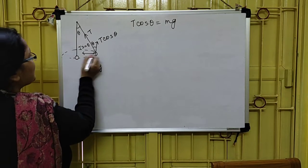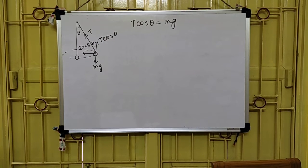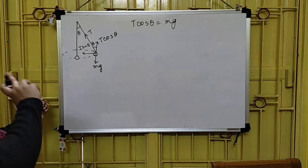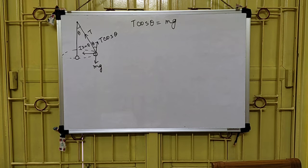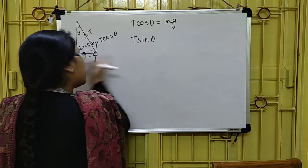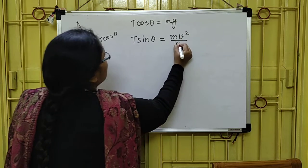Since the object is moving in horizontal circular motion, the centripetal force acts towards the centre of the circle. Therefore T sin theta provides the required centripetal force. So T sin theta equals the centripetal force, which is Mv² / R.